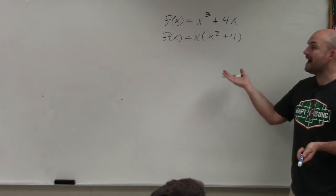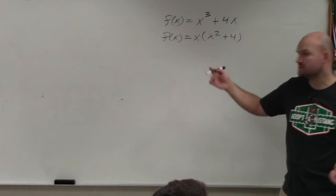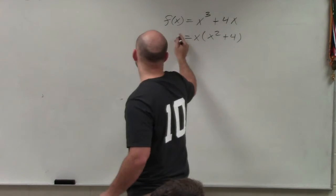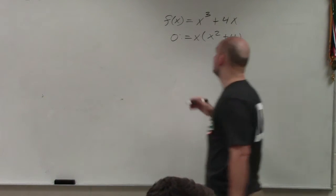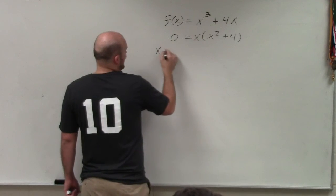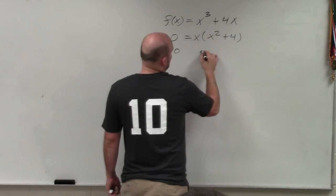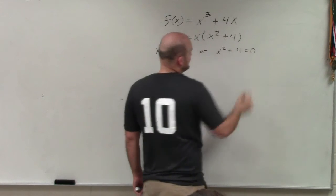Correct? Well, now I can solve both of those. So I'll use the zero product property. I'll replace f(x) with zero. And by replacing f(x) with zero, I say x is equal to zero, or x² + 4 is equal to zero.